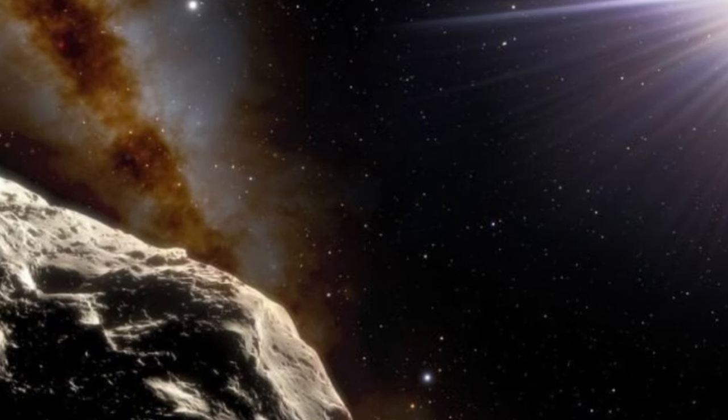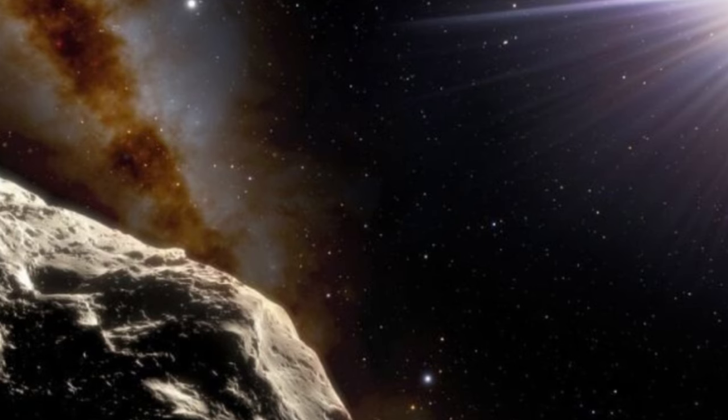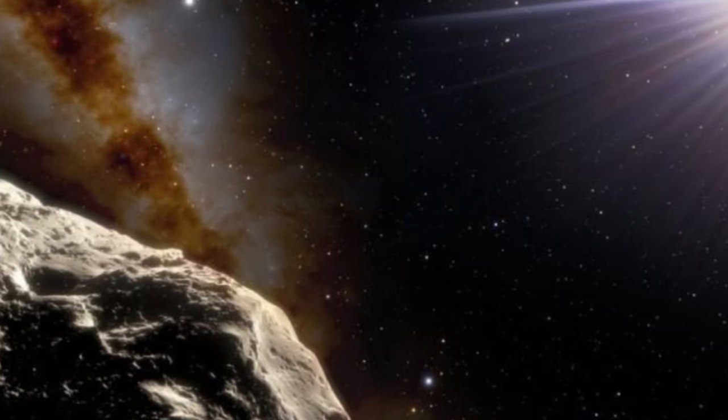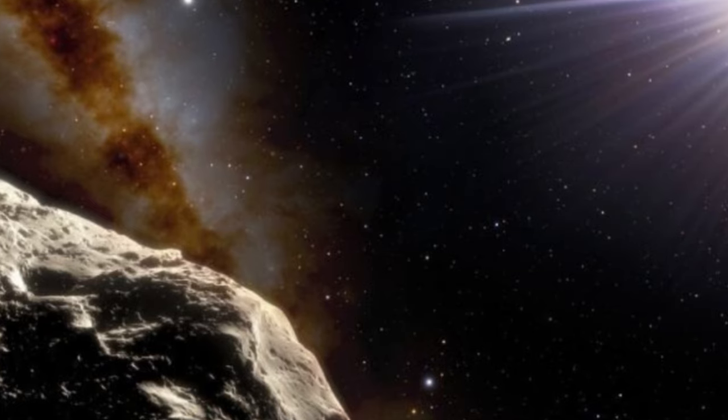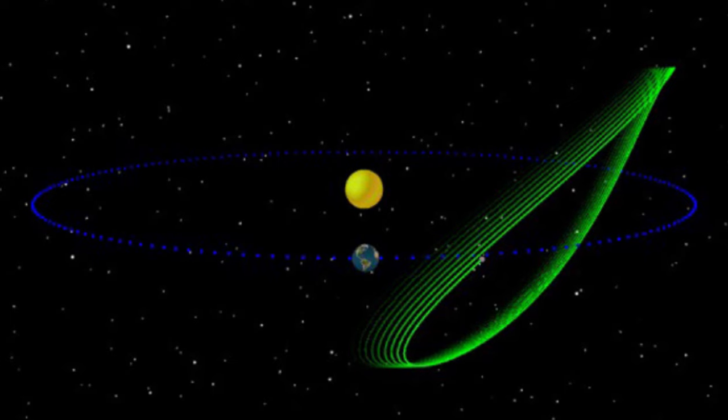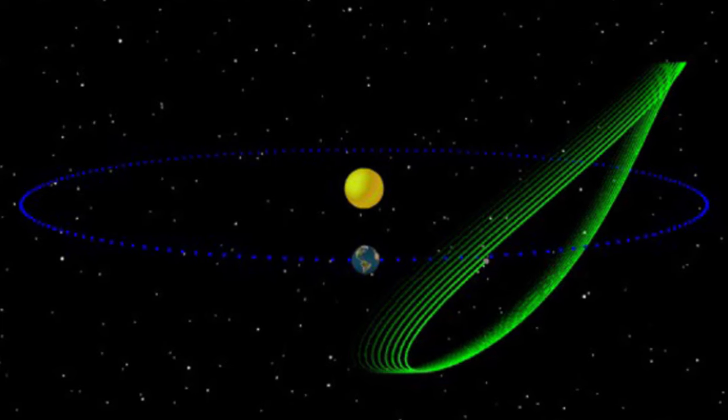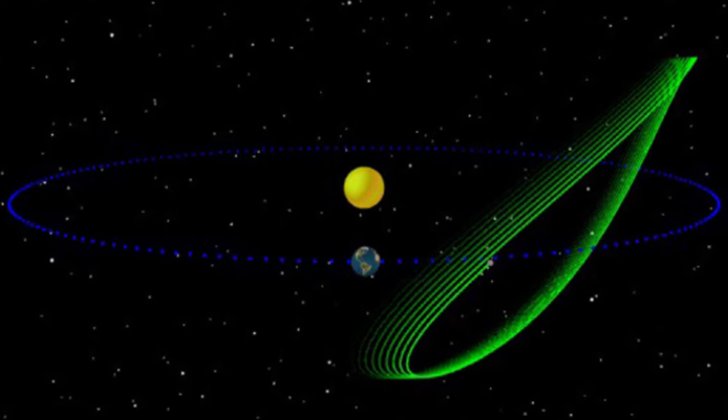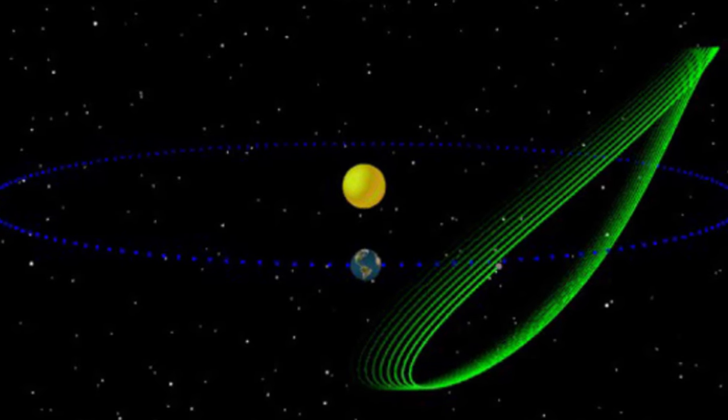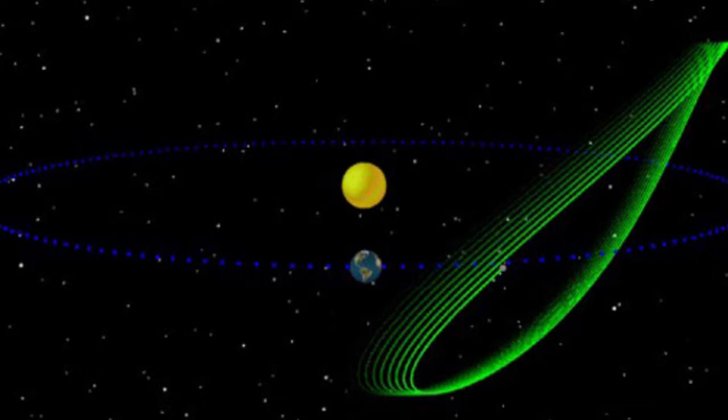Trojan asteroids are asteroids, also known as minor planets, that share the orbital path of larger planetary bodies in the solar system. They can be found in two gravitationally stable regions leading and trailing the planet, known as Lagrange points. These are pockets where the gravitational pulls of the planet and the Sun balance perfectly with the centripetal force of any small body in that region to basically hold it in place.